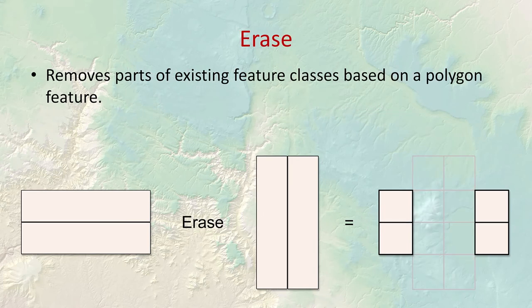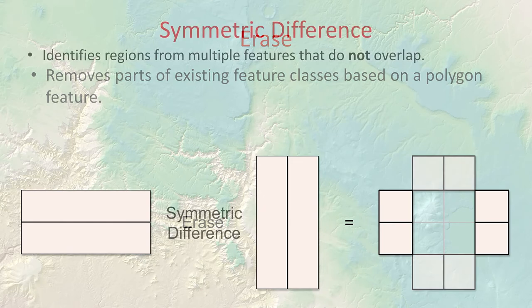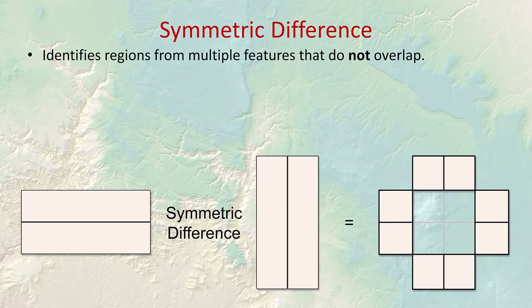The erase tool simply removes parts of an existing feature class based on a polygon feature — a pretty straightforward tool.